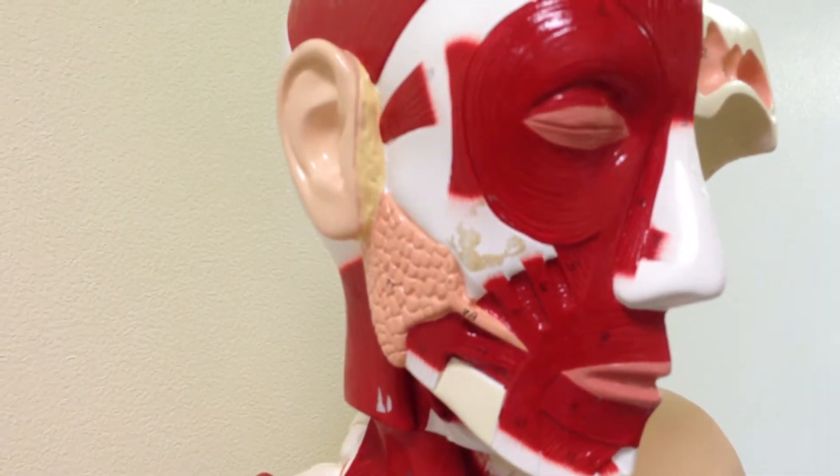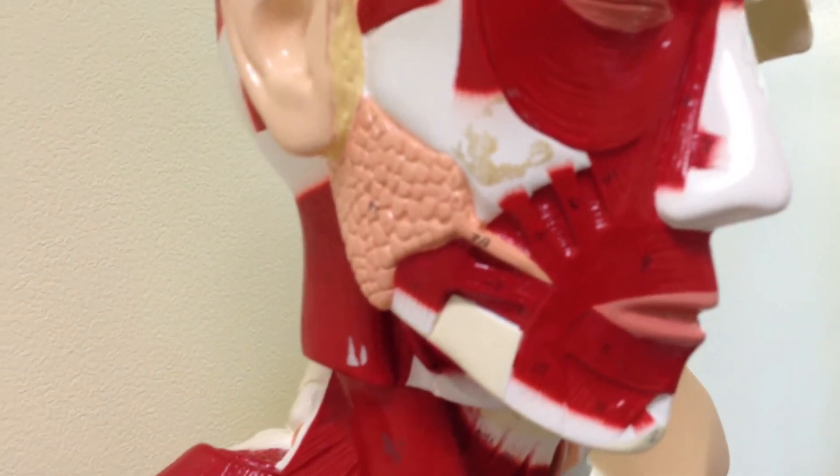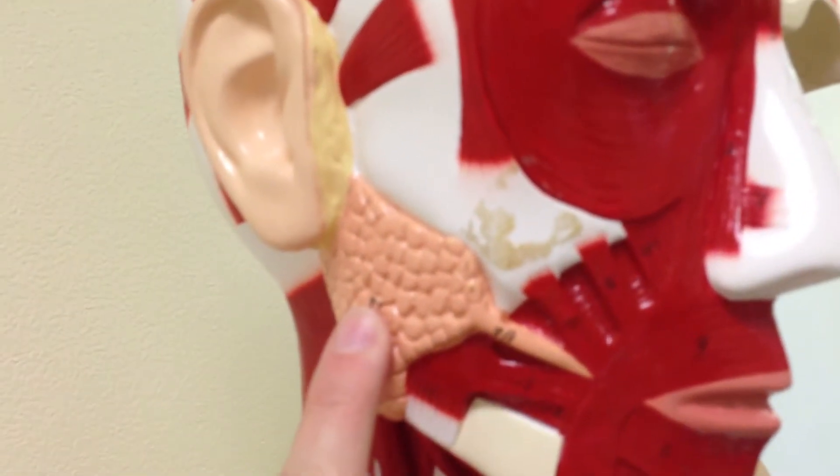There's three that we have to know, and on the model the big one that you see right there is called the parotid salivary gland right here, and then underneath here, that's number eight if you can see it. That is the submandibular salivary gland, and then over on the other side,